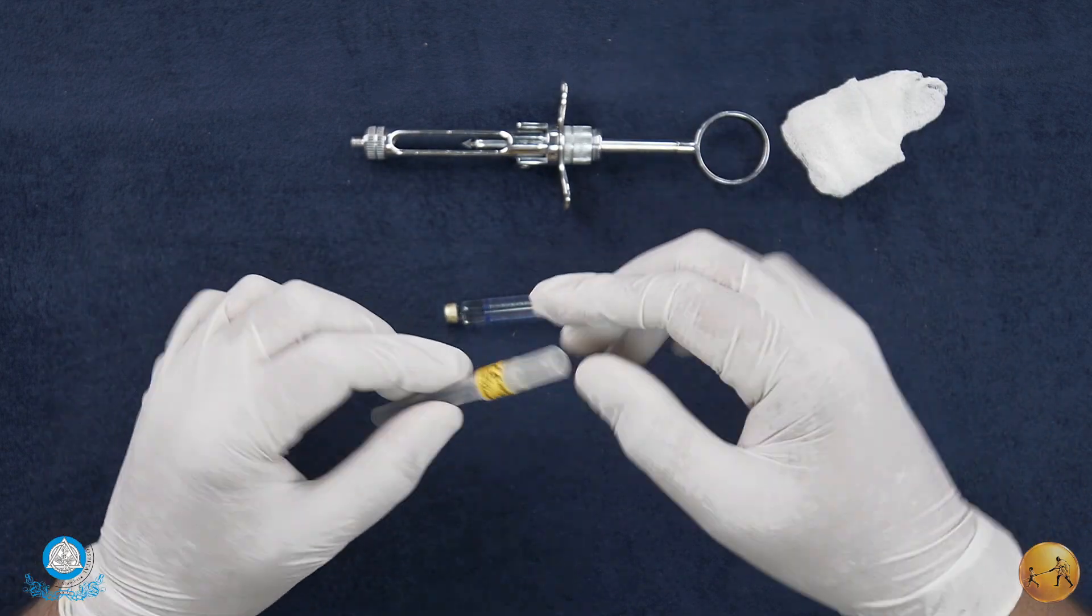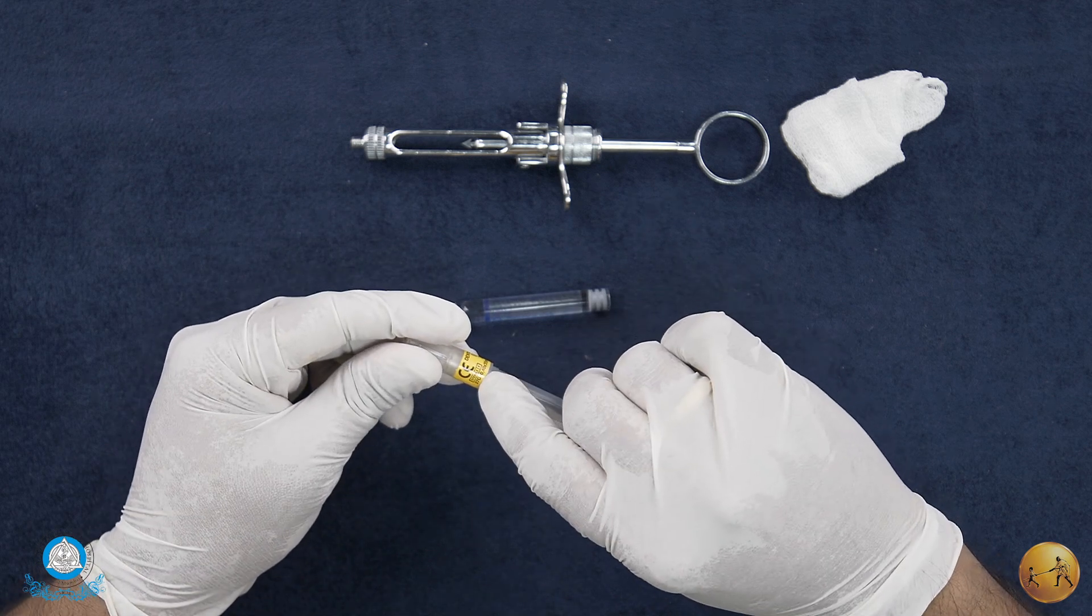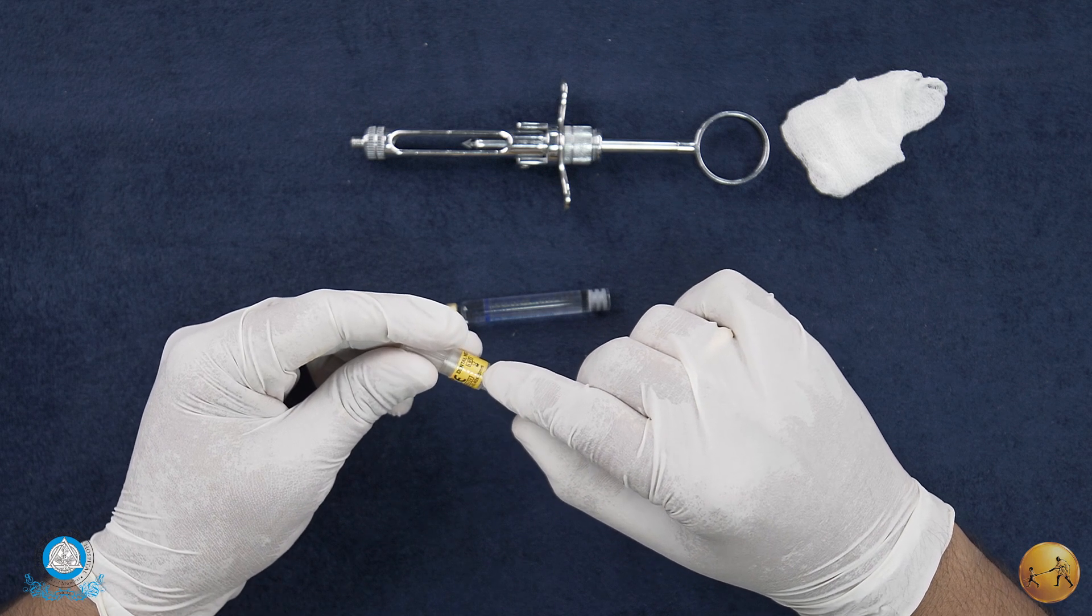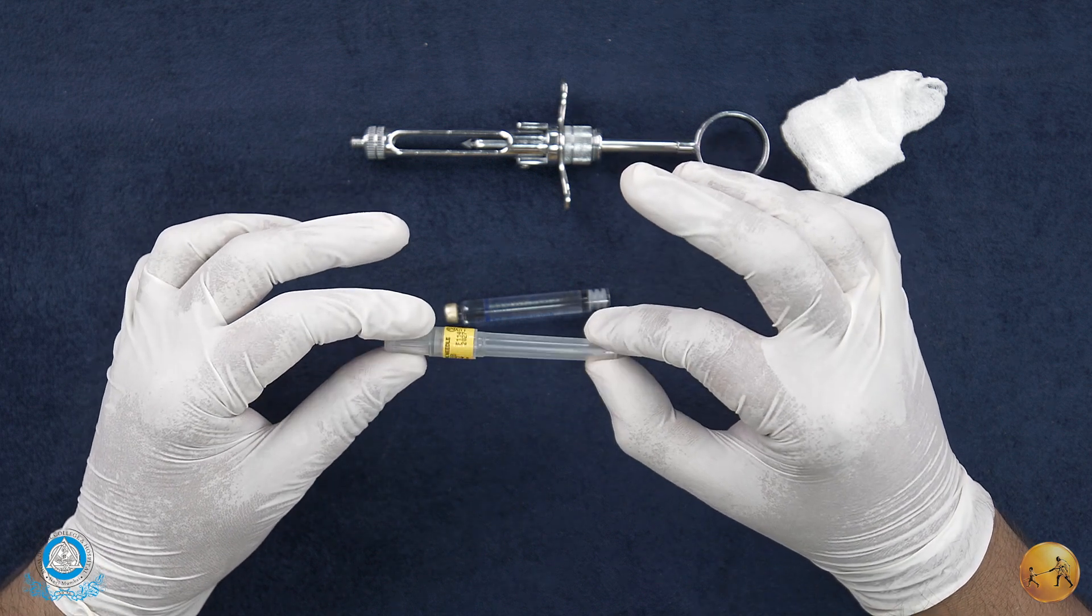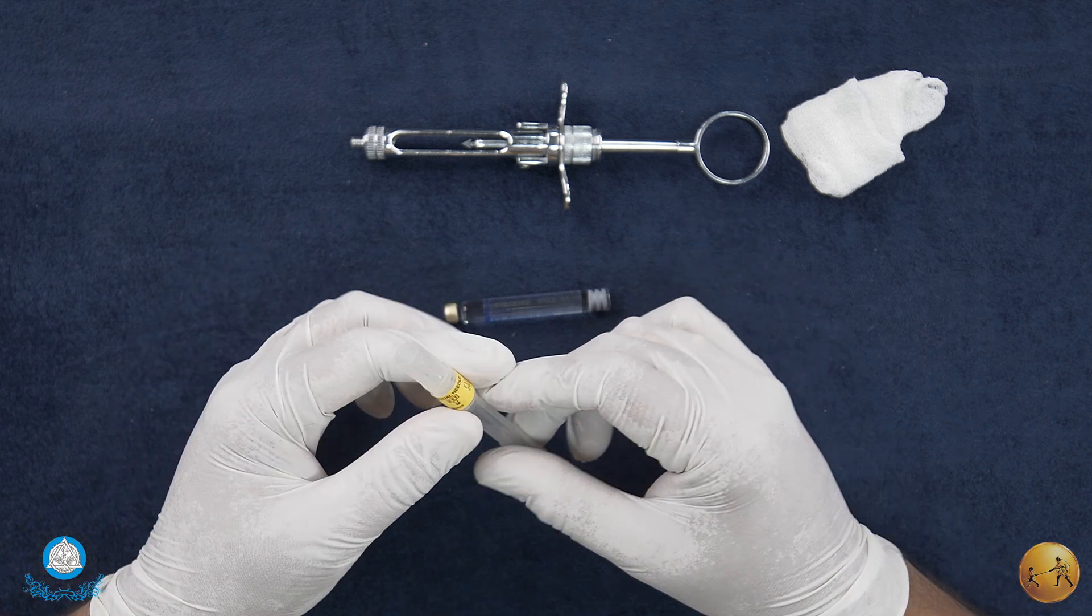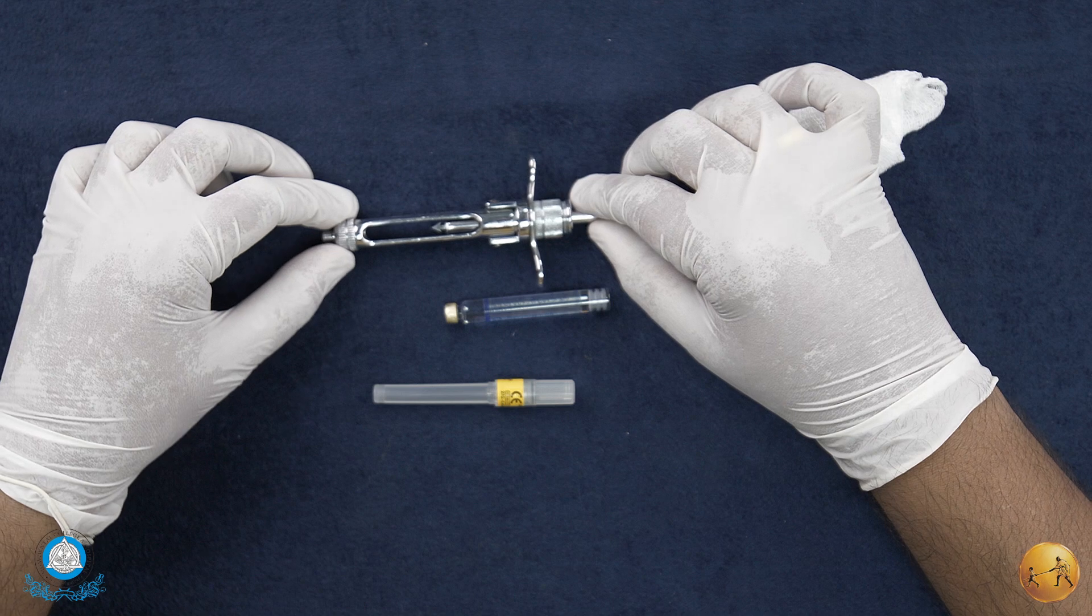This needle is sealed. If you are able to clearly see, it's a 27 gauge needle which is 35 millimeters long, and the sterilization is guaranteed as long as you do not open the seal. Also always note the expiry date of the needle.